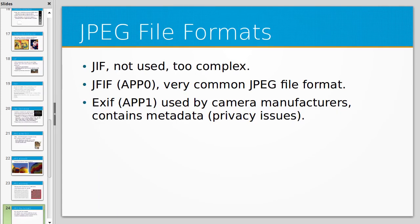There are different JPEG file formats. JFIF, also called App0, is very commonly used. EXIF, called App1, is used by many modern camera manufacturers and contains more metadata. This can cause privacy issues because information about who you are or where you were when you took the photo is actually embedded in the image and can leak information.